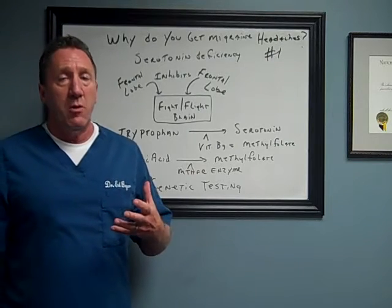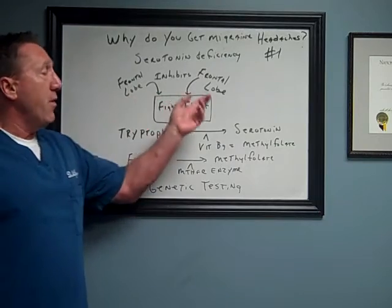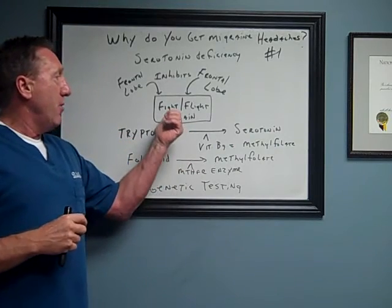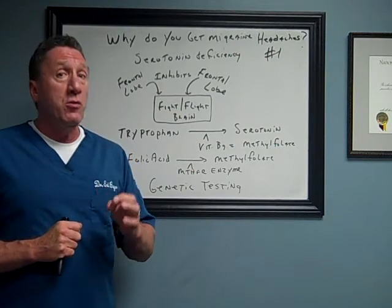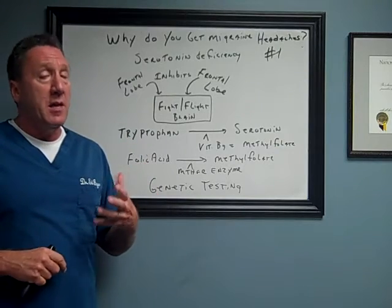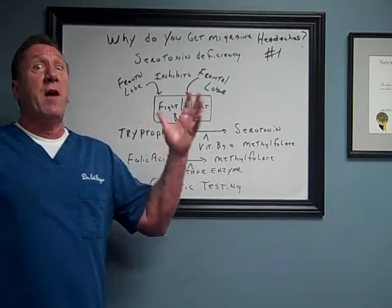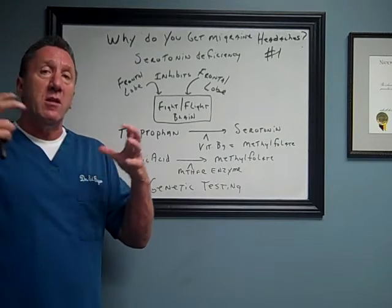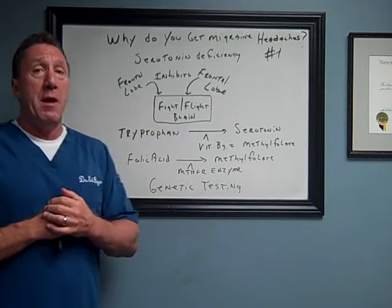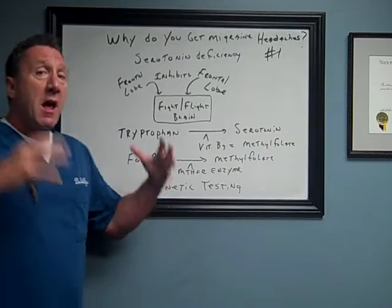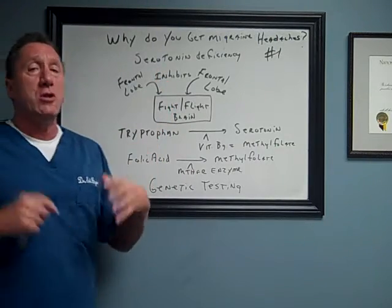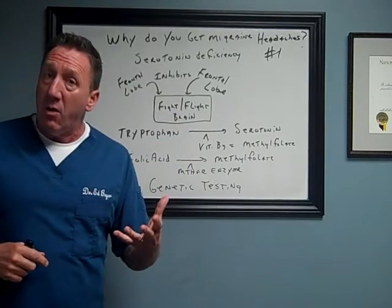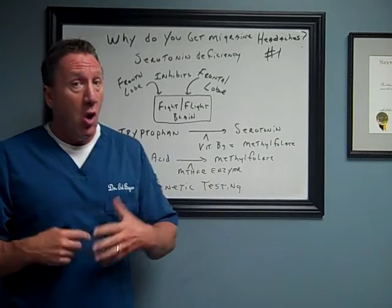Serotonin is a very important neurotransmitter used in various areas of our brain. One of those areas is our frontal lobes, the top of our brain. One of the functions of our frontal lobes is to act as a brake pedal on another area of our brain called the fight-or-flight part, our midbrain, also known as our mesencephalon. In migraine headaches and many other disorders, this area starts to fire too much, gets unstable, and causes various symptoms — one of which is migraine headaches, because it causes dilation of your blood vessels. This area also perceives light and sound, which is why many sufferers experience light and sound sensitivity during a migraine.